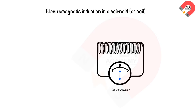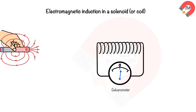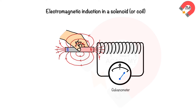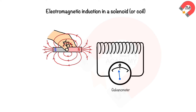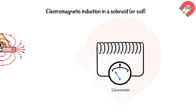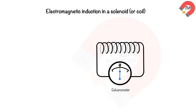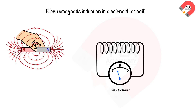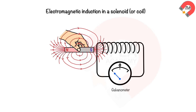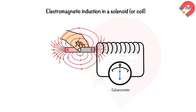When the number of turns in the solenoid increases and the north pole moves in, the deflection is greater to the right — showing that induced current increases with more turns. When a stronger magnet moves into the solenoid at the same speed, the deflection is greater — showing that induced current increases with greater magnetic field strength.